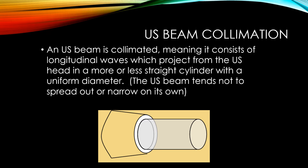Ultrasound tends to be collimated — that is, it consists of longitudinal sound waves that project from the ultrasound transducer in more or less a straight cylinder with a uniform diameter. This ultrasound beam tends to not spread out or narrow on its own. The ultrasound is projected in a particular direction covering a particular area, very different from audible sound, which you can hear in any direction. The implication for therapy is that if you're trying to ultrasound a particular structure, you have to make sure that structure is within this collimated beam.